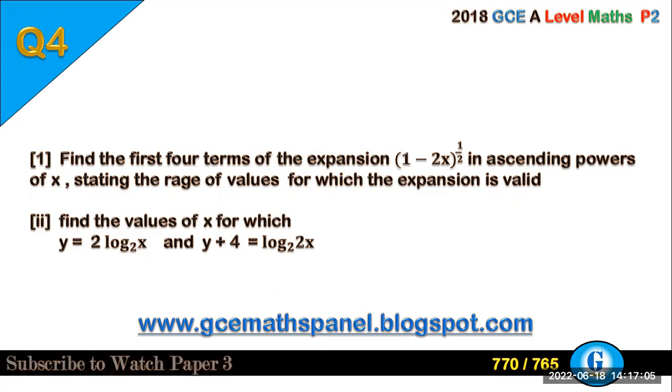So this question reads, find the first four terms of the expansion (1 - 2x)^(1/2) in ascending powers of x, stating the range of values for which the expansion is valid. Sub 2, find the values of x for which y = 2 log₂ x and y + 4 = log₂ 2x.